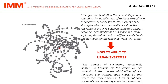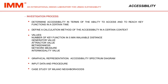The purpose of conducting accessibility analysis is to understand the uneven distribution of key functions and transportation nodes, so that the weaker parts in terms of not easily accessible areas in the city could be spotted out. The investigation process consists as follows: determine accessibility in terms of the ability to access and to reach key functions in a certain time.